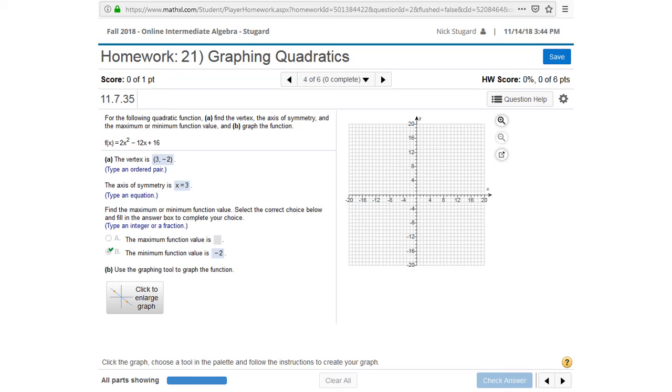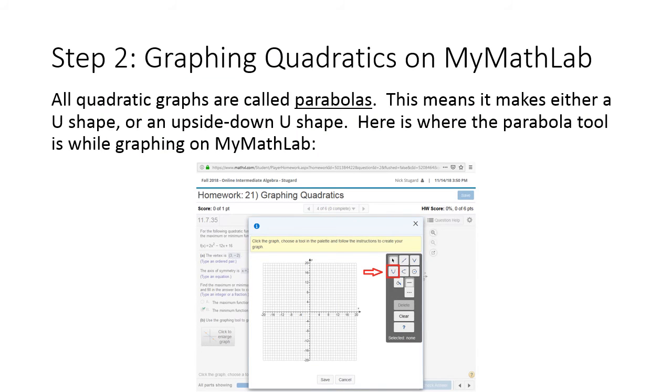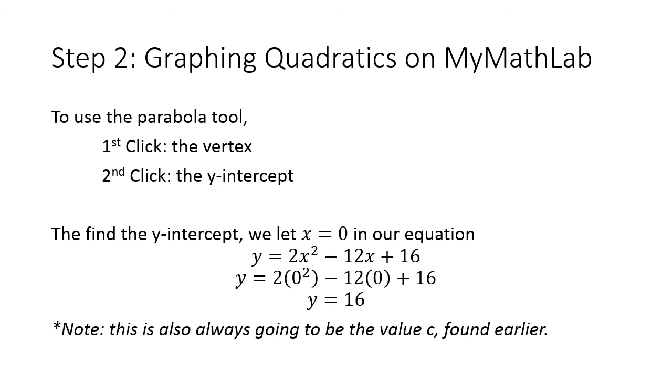So now we have to worry about graphing the quadratics on MyMathLab. So the first thing we're going to need is the parabola tool. And all quadratics have a shape called a parabola. You can see I marked it there in red. When we grab the parabola, we're going to need two clicks, just like when we click a line. The first click has to be your vertex. And the second click should be the y-intercept.